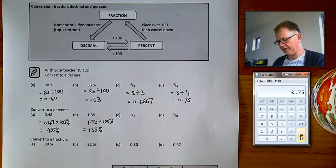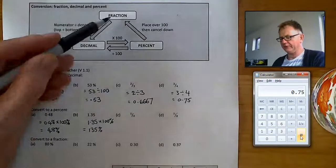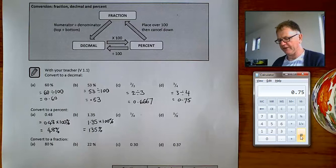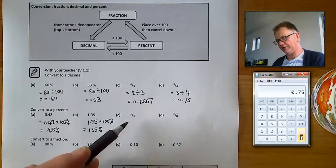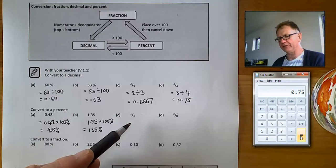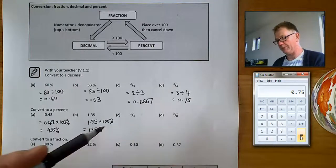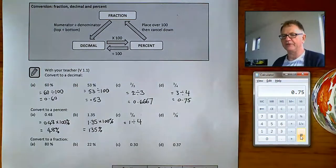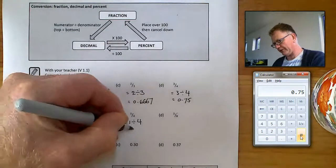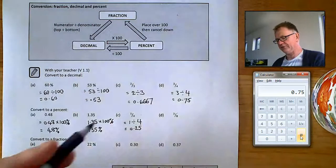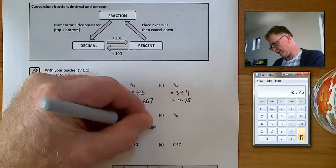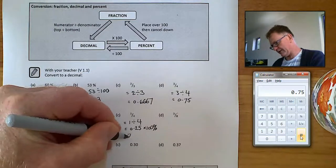The next step is changing a fraction into a percentage. This is a trickier operation because it usually involves two steps: from the fraction, we normally change it to a decimal first, and then change the decimal to a percentage. To change a quarter into a decimal, divide the numerator by the denominator — one divided by four equals 0.25. Then, to get a percentage, times that by 100 to get 25%.